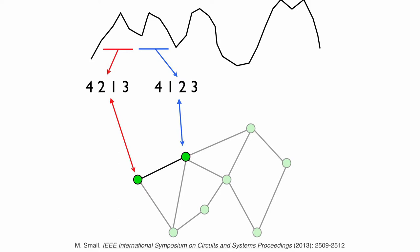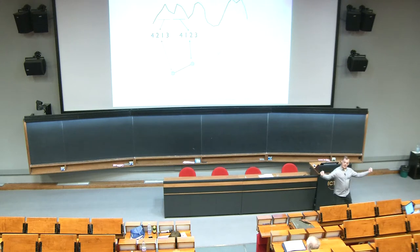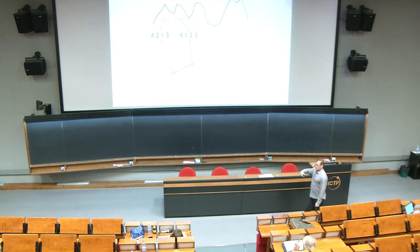The one parameter here is the window size. I'm taking four successive points. What I'm saying is the first point in those four is the smallest, the third point is the largest, the second point is the second largest, and the fourth point is the third largest. It's just the relative size of those points. I've chosen a window length with W factorial different possible permutations. I now say each of those permutations is a node on the network, looking at transitions between permutations.